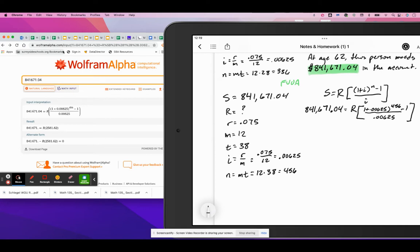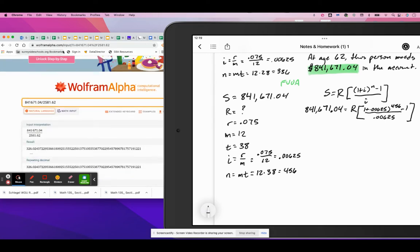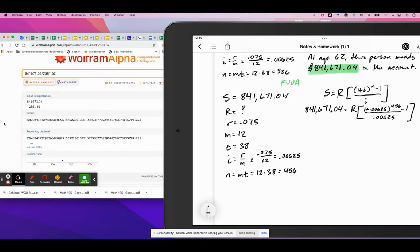So what am I dividing by 25, 81, 62? And we get that this person needs to put away $326.02 a month.